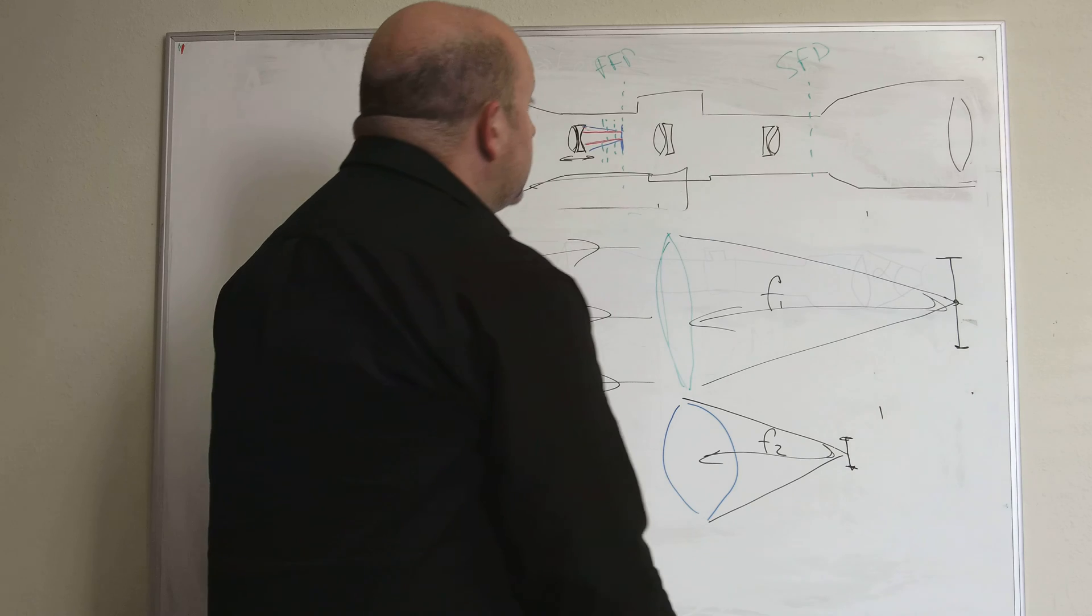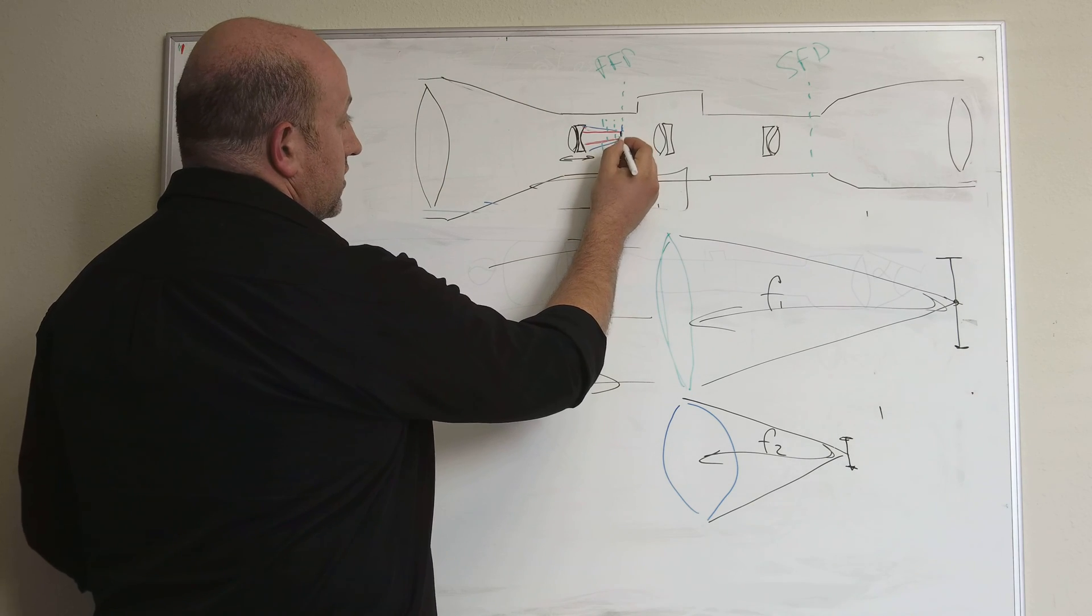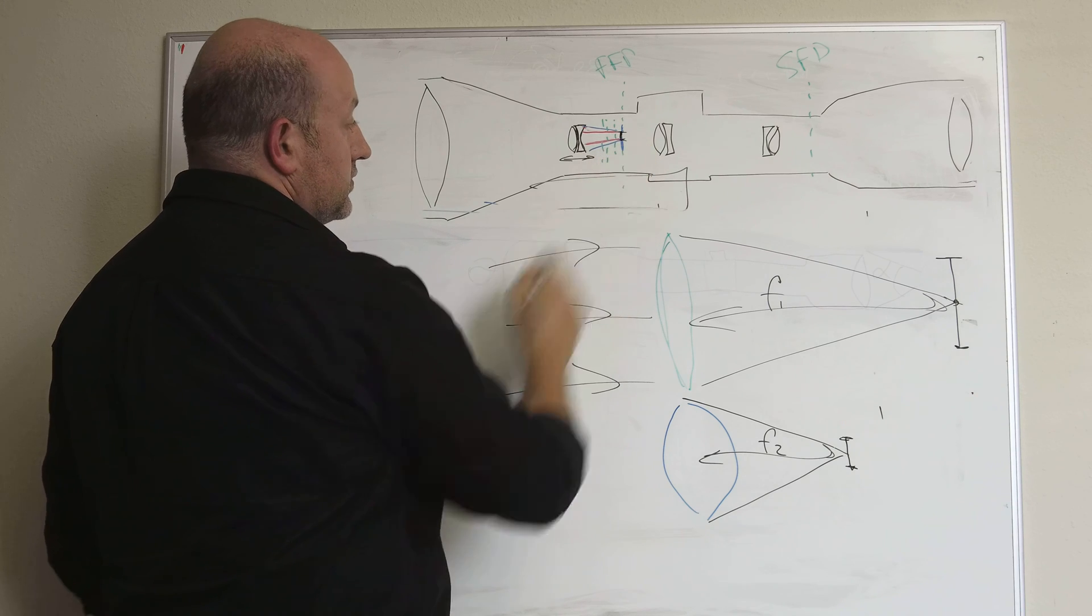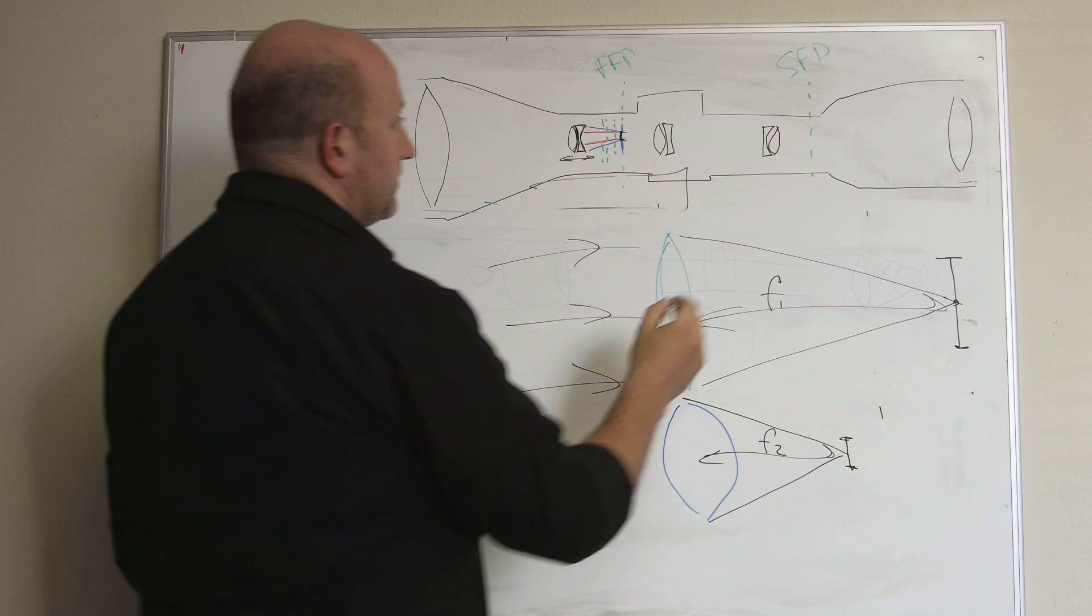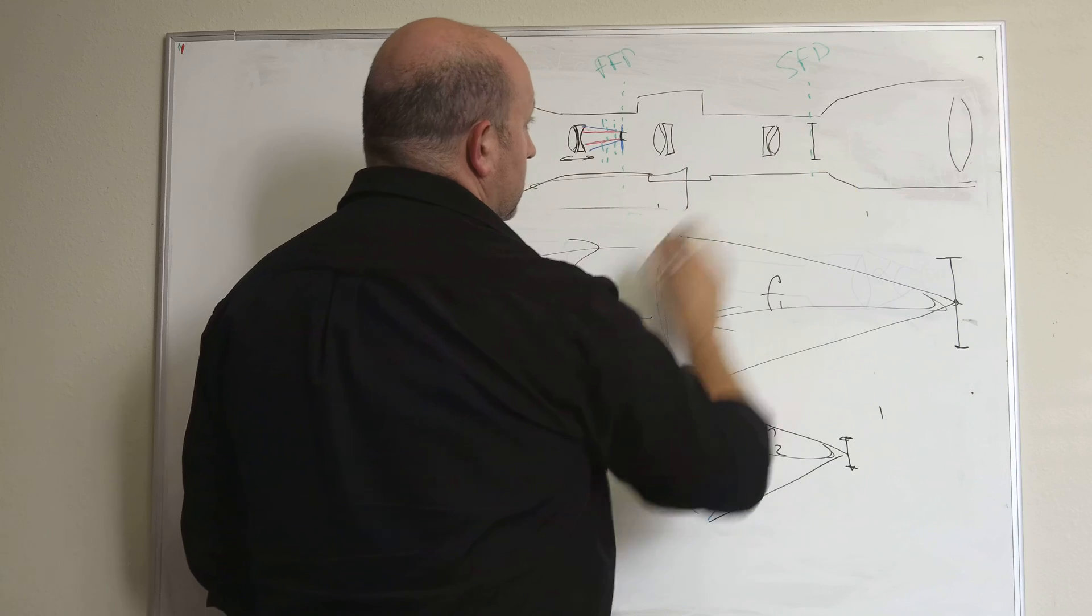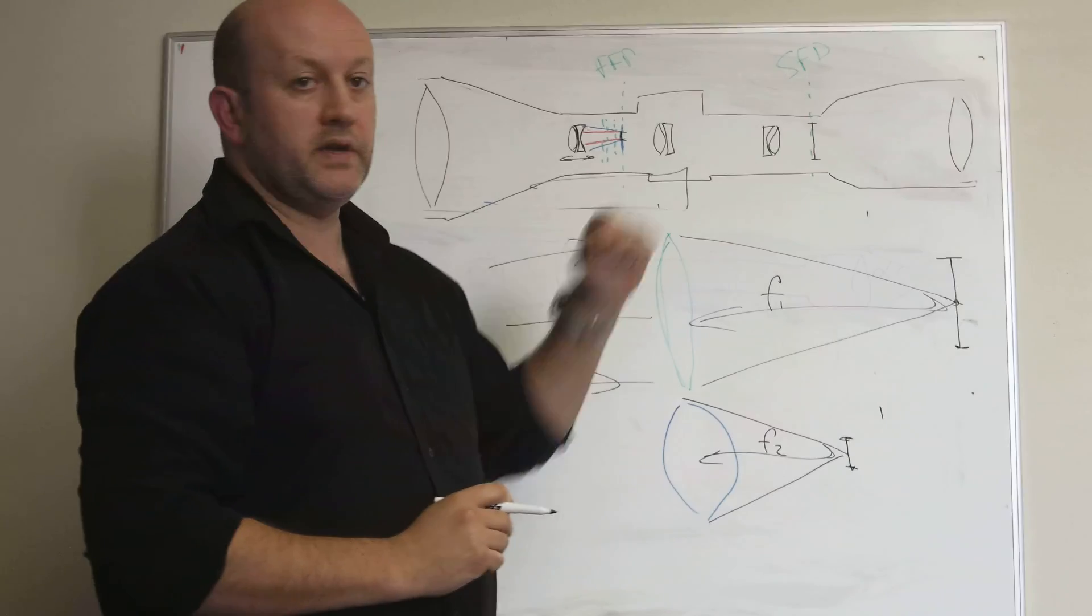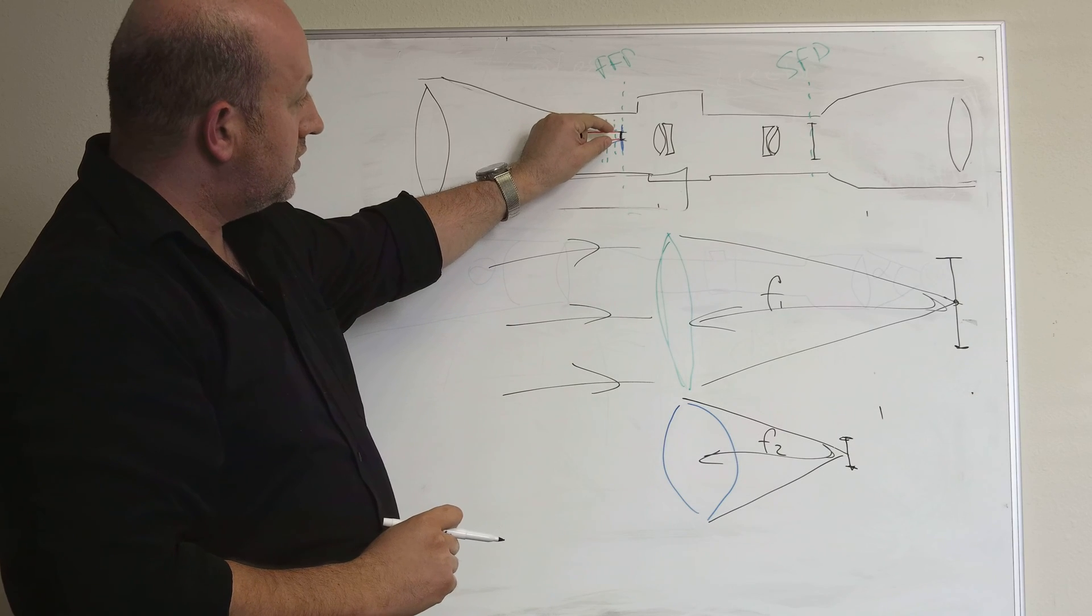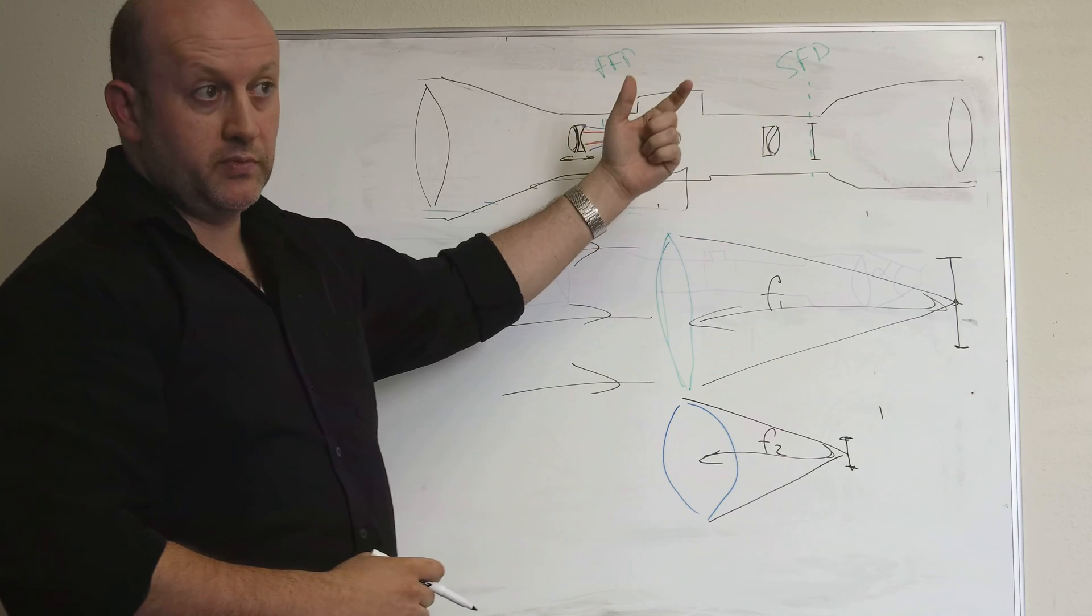Well, let's go back to my favorite picture of the riflescope. Let's say we created an image here that's of certain size. The erector system takes this image of certain size and it magnifies it. It makes it bigger by some ratio. Let's say the erector system makes it five times bigger. If you start out with a very small image, the five times bigger image in the second focal plane is larger, but still not humongous.